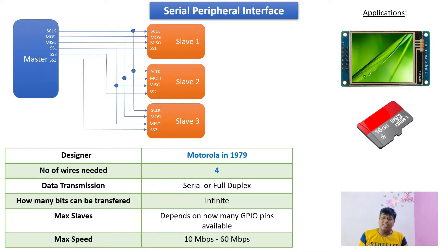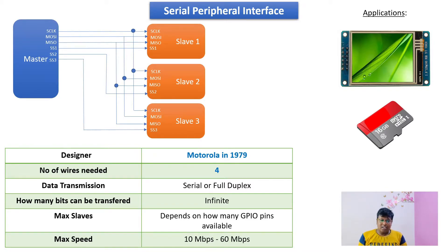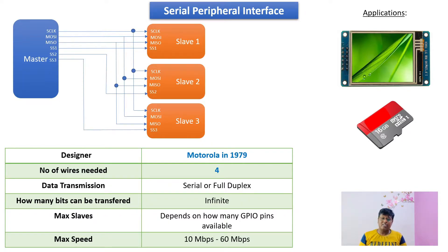The next protocol is Serial Peripheral Interface, also known as SPI. SPI was designed by Motorola in 1979 and is a four-wire protocol. It supports one master and n number of slaves. The four wires are: system clock (SCLK), Master Output Slave Input (MOSI), Master Input Slave Output (MISO), and the Slave Select pin, also known as the Chip Select pin, which is used to select a particular slave.